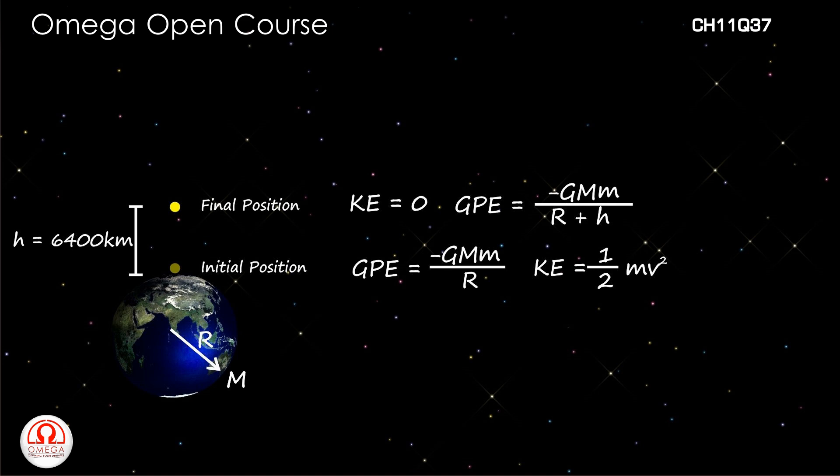Now, the total mechanical energy of the system has to be conserved. Therefore, -GMm/R + ½mv² must be equal to -GMm/(R+h) + 0.